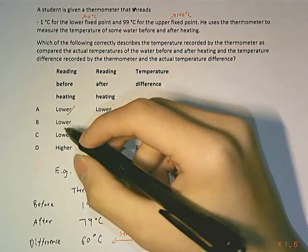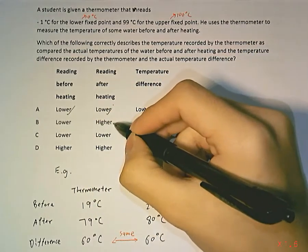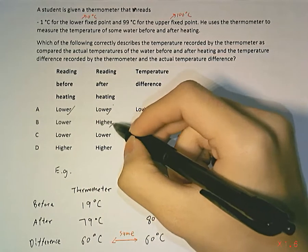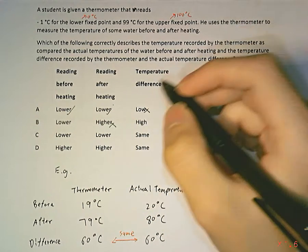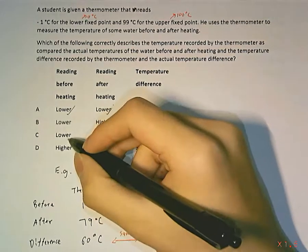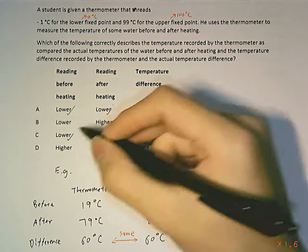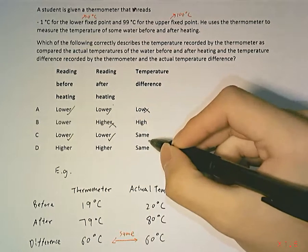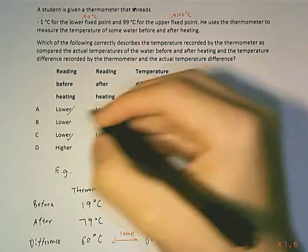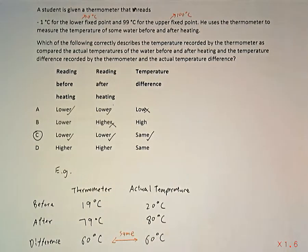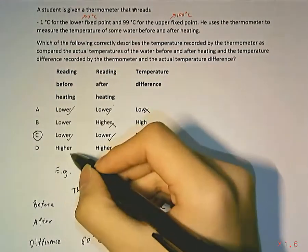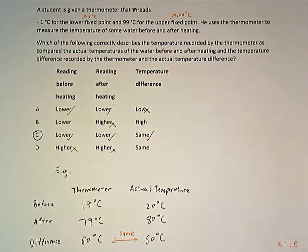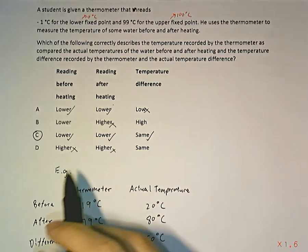So option A is wrong. Option B, which says the reading after heating is high, is also wrong. Looking at option C — lower, lower, and same — yes, this is the correct answer. Option D is also wrong for the same reasons.